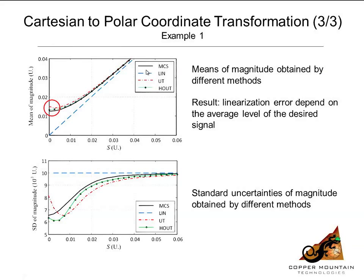And as you can see, the unscented transform and the higher-order unscented transform track the Monte Carlo result more closely than linearization, especially at smaller values of the magnitude. And similarly, on the bottom plot, linearization is the worst of the estimates, as would be expected. And the unscented transform and higher-order unscented transform track the Monte Carlo result more closely.